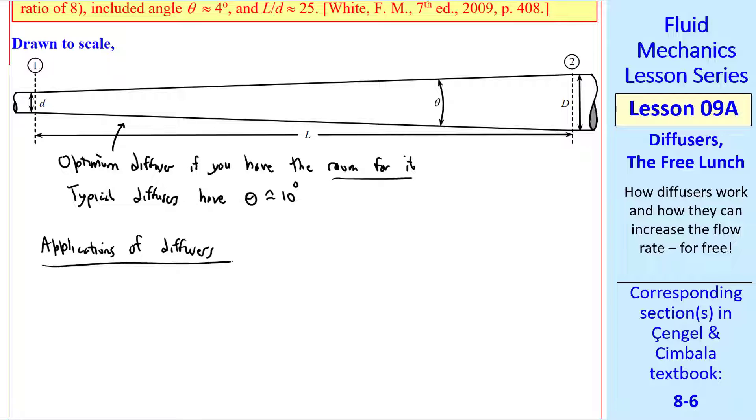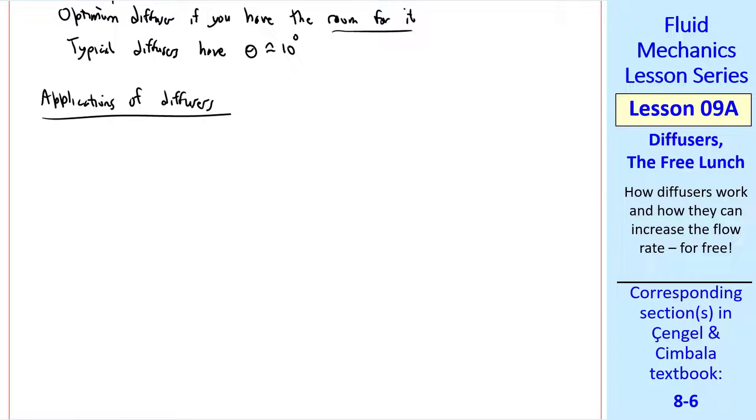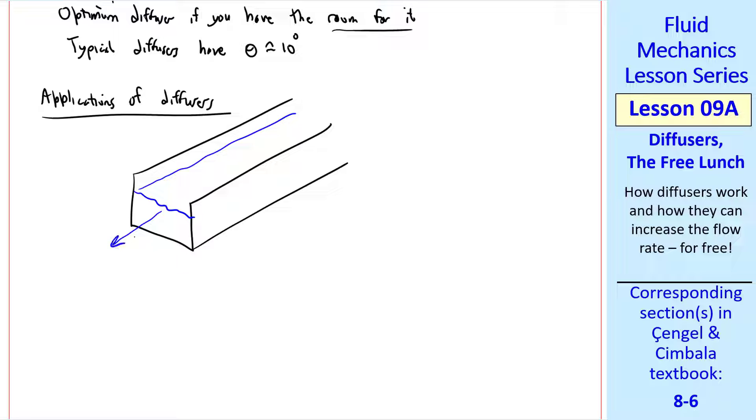What are some applications of diffusers? Well, there's a legend about Roman aqueducts, where water flows through the aqueduct, and farmers could irrigate their crops with it. They paid the government according to the size hole they had.